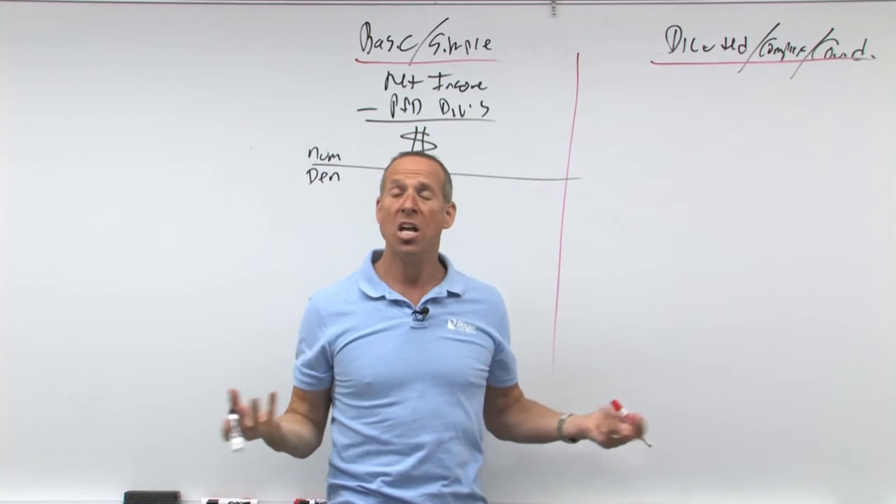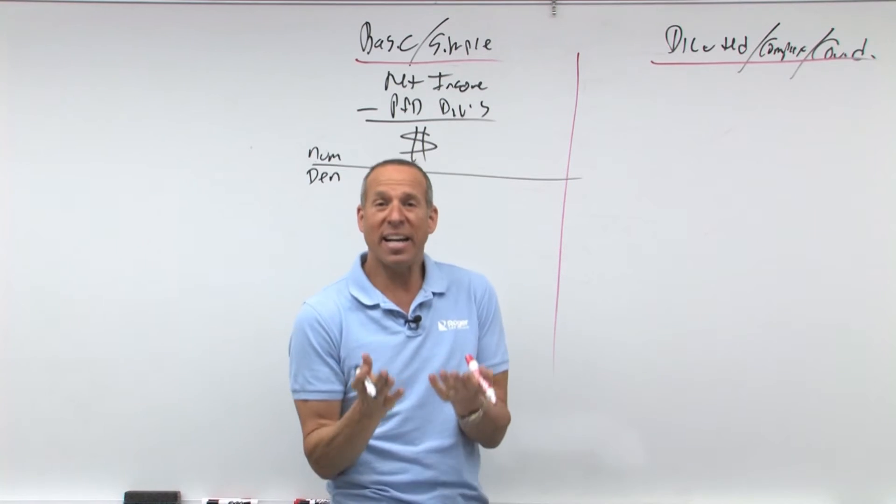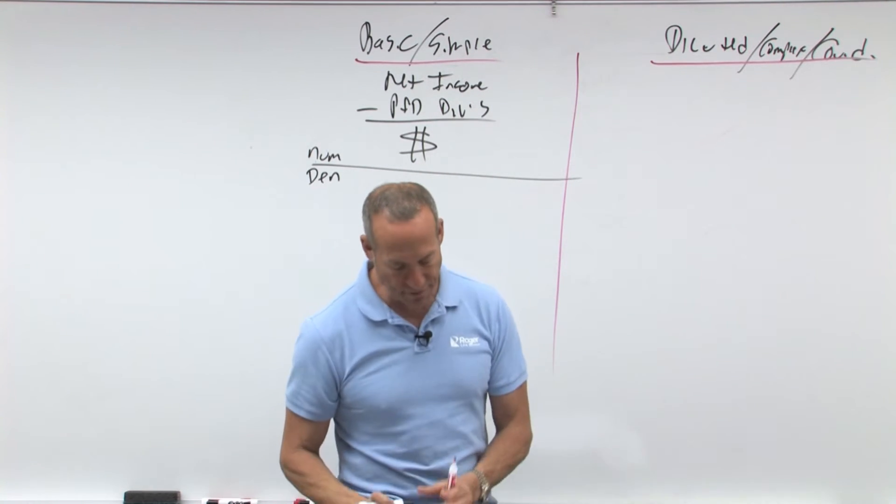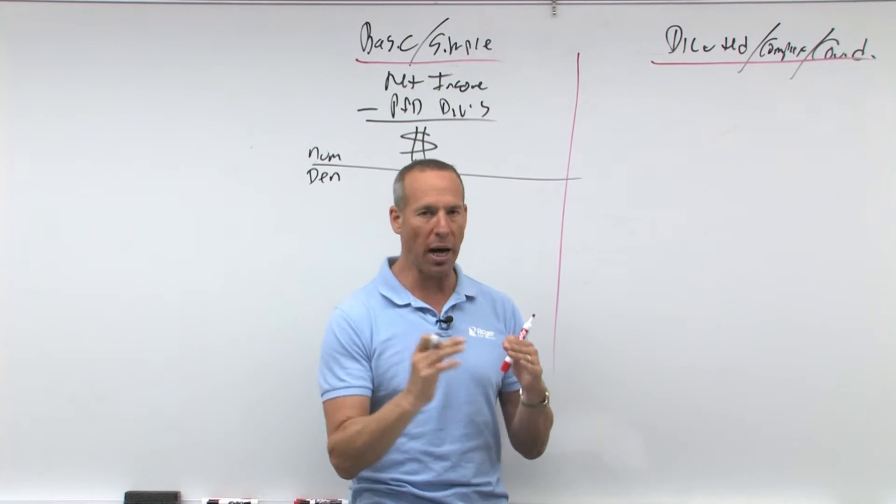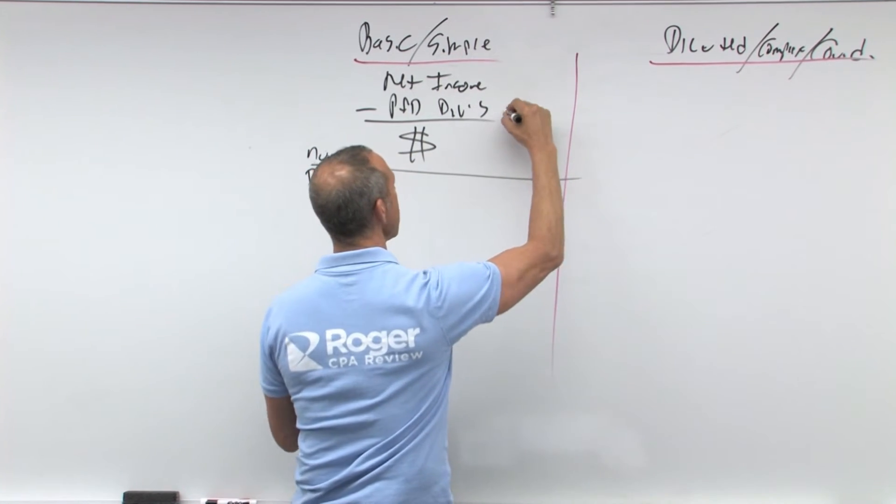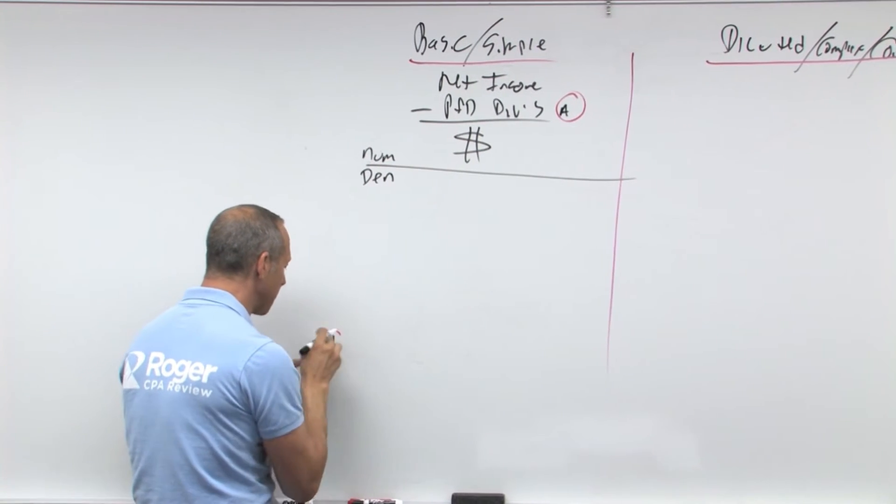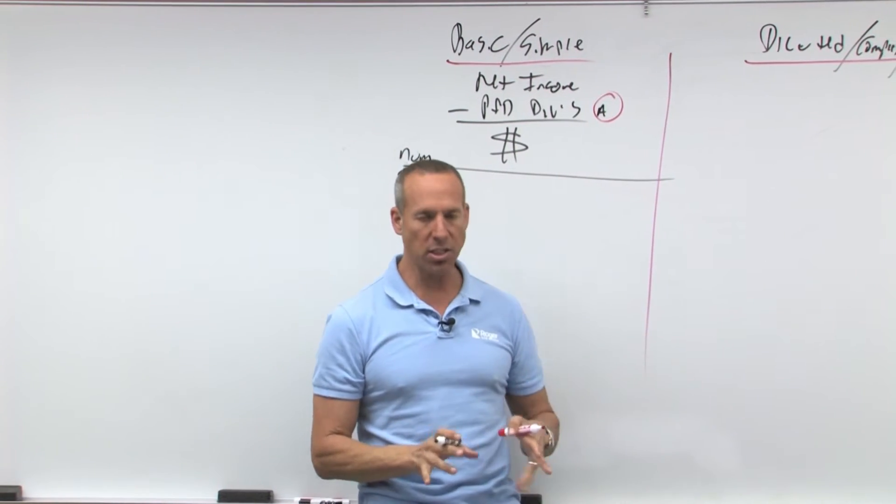Because we're trying to figure out the money we have available to give to the common shareholders. Who gets paid first? Preferred. So if preferred gets first, that money's not there for the common. So we're going to take our net income, we're going to have to take out our preferred dividends. But I'm going to put a little A here, because I want to note what this A means.